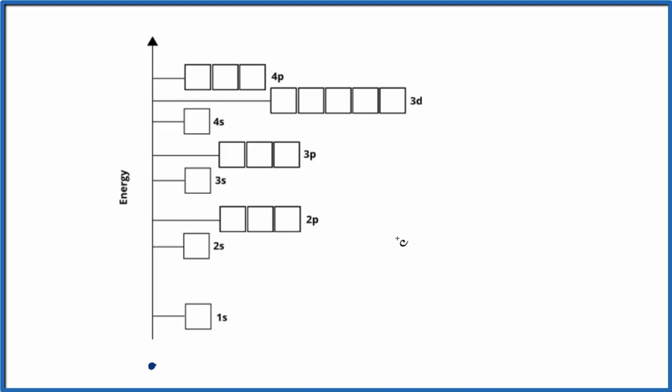So we have the electron configuration for beryllium is this 1s2, 2s2. So we have a total of four electrons.